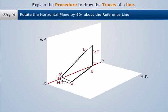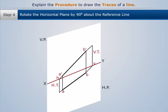And in the last step, we rotate the horizontal plane by 90 degrees above the reference line. So let's rotate the horizontal plane by 90 degrees in the clockwise direction above the reference line XY.